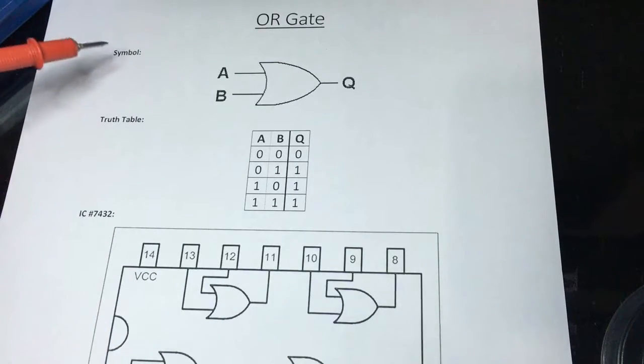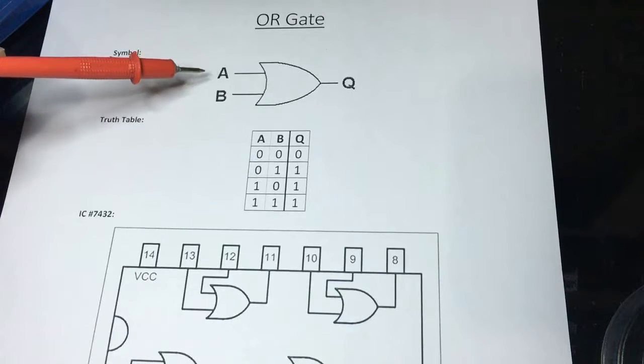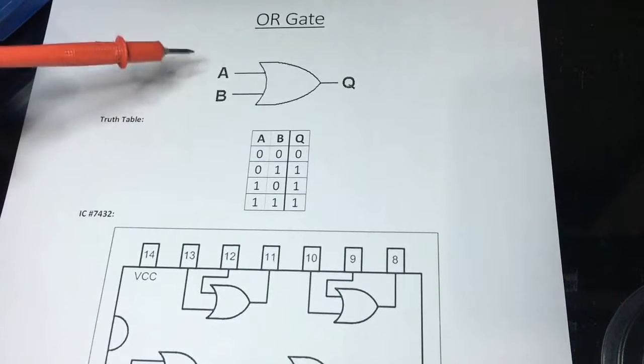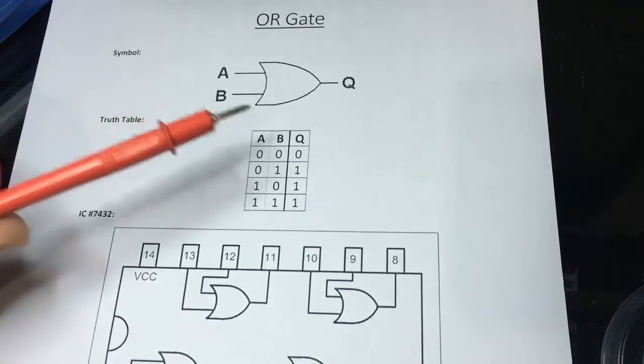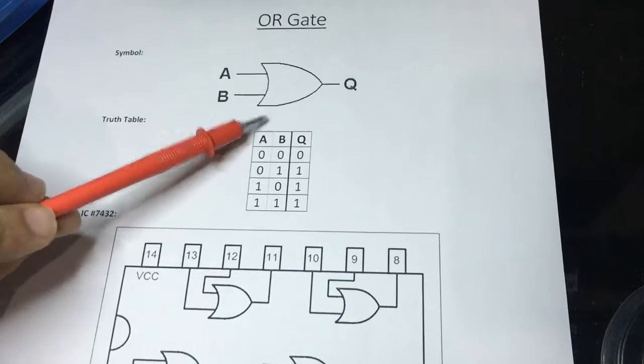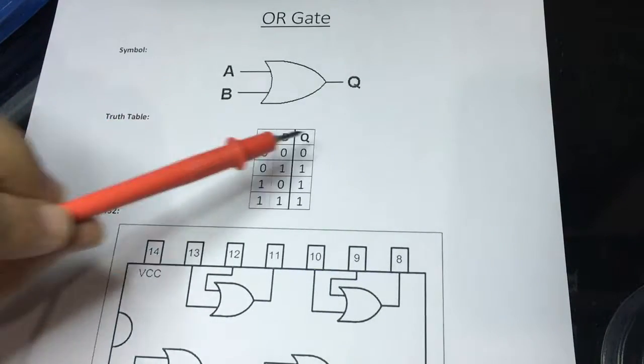First of all, starting with the symbol of the OR gate, this is the symbol of the OR gate in a schematic. This is its shape. We have two inputs here, A and B, and we have the output Q.